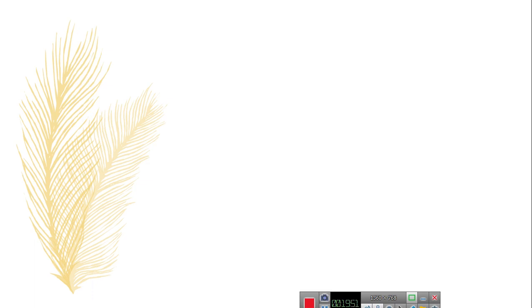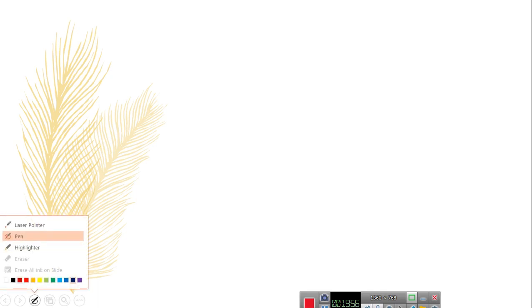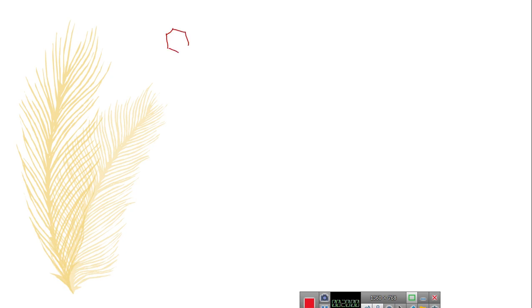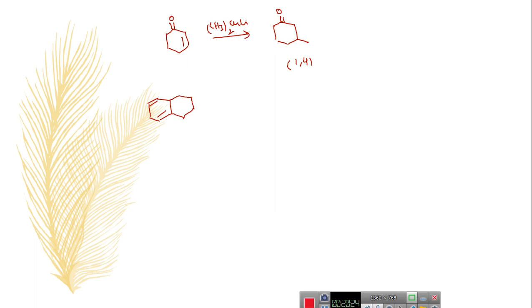Let us discuss some examples of this conjugate addition with copper reagents. First, take an alpha, beta unsaturated carbonyl compound and treat with dimethyl lithium cuprate — it gives you the 1,4 addition product predominantly. But when you have a bicyclic system and treat with Gilman's reagent followed by hydrolysis, you observe two alpha, beta unsaturated positions — two beta positions.